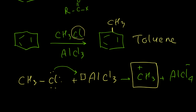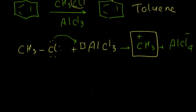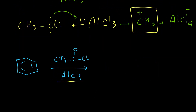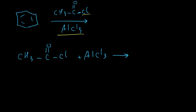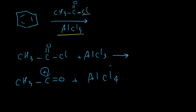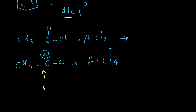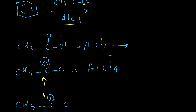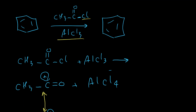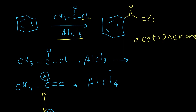For acylation, AlCl3 removes the chlorine from an acyl chloride such as CH3COCl and produces a CH3CO+ acylium cation plus AlCl4−. This carbocation has another resonance form and is very stable, so the reaction is clean and gives only one product. We remove one hydrogen from the benzene ring and attach COCH3, giving acetophenone — which has a common name like toluene.